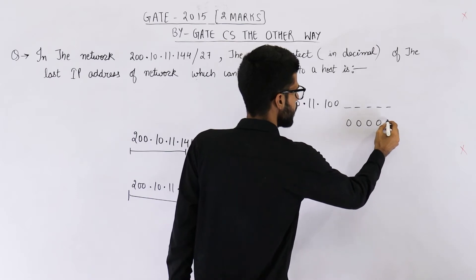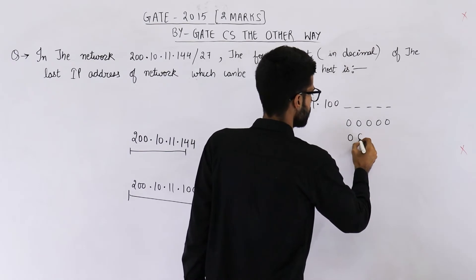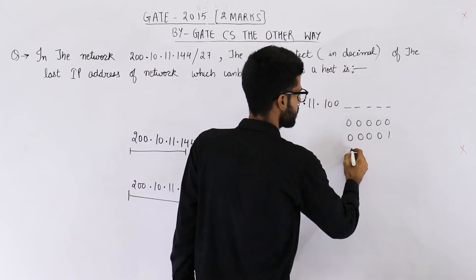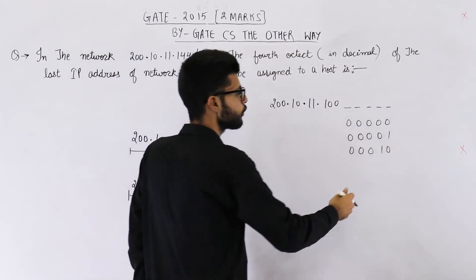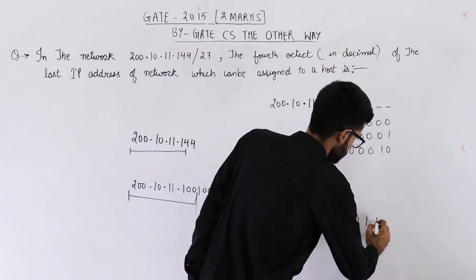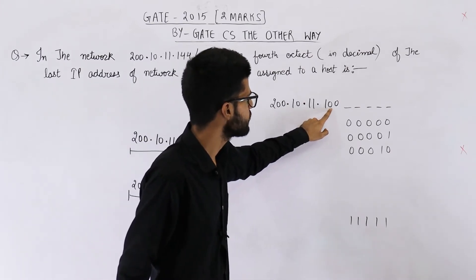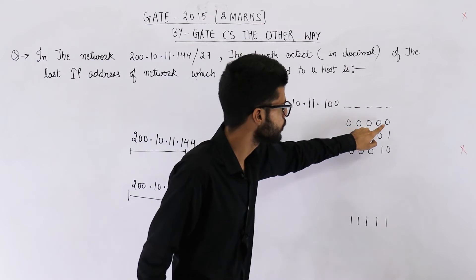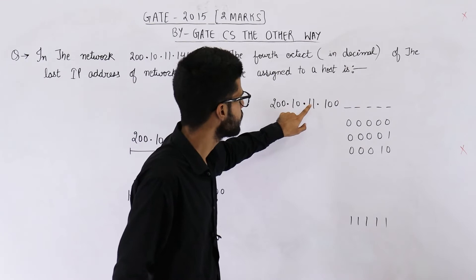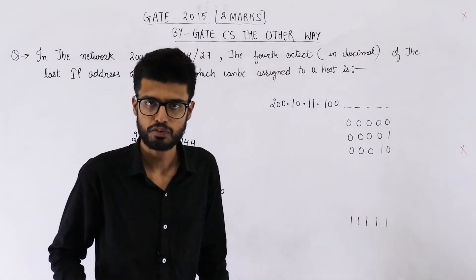So the first IP address will have all zeros in the host ID bits. The next IP address will have host bits representing 1, then 2, 3, 4, 5, and so on until all ones. So 200.10.11.10000000 is the first IP address of this network, and 200.10.11.10011111 is the last IP address of this network.